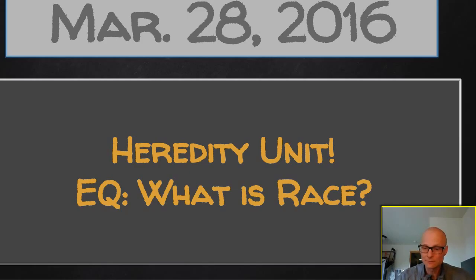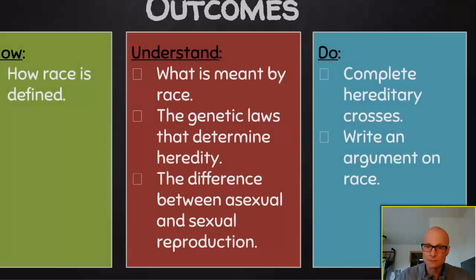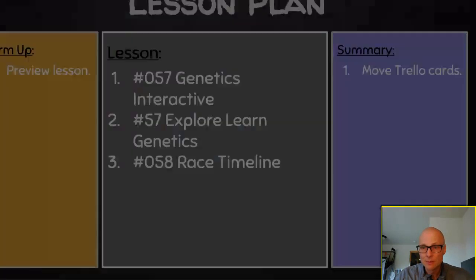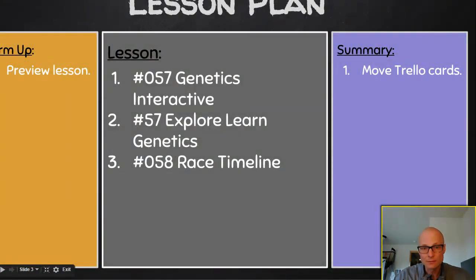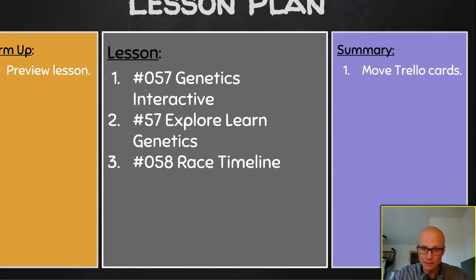We're in the final week of the Heredity Unit. We're asking ourselves: what is race? The know, understand, and do's are all the same as last week. If you're on task with us, you should be working on 57 today and 58. That's where you should be on Monday.